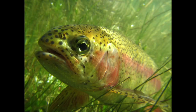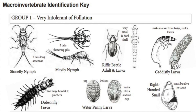So why do we even care about this? Well, no matter the aquatic environment, macros serve as an important food source for many predators, including our rainbow trout. However, different kinds of macros can tolerate different water conditions and levels of pollution. The presence or absence of certain macros can be used by scientists to determine if a water source is clean or polluted.